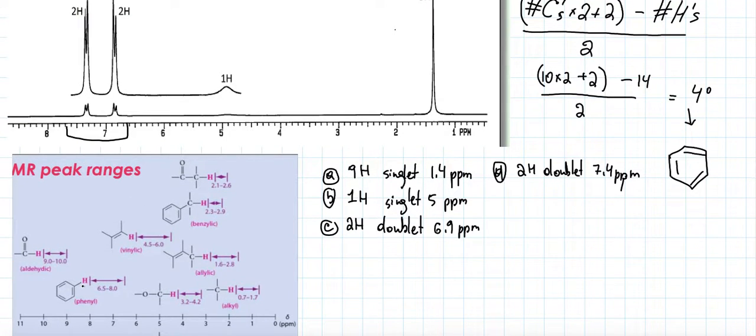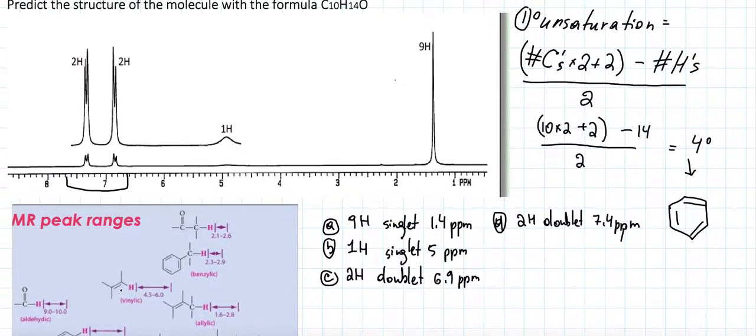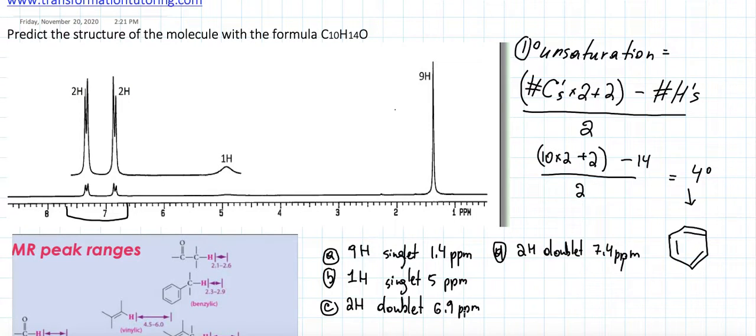We can see that hydrogens on the benzene ring must have 6.5 to 8 ppm shift. Now here we have two hydrogen 6.9, two hydrogen 7.4. So yes, these are the hydrogens on the benzene ring, because they follow the ppm.